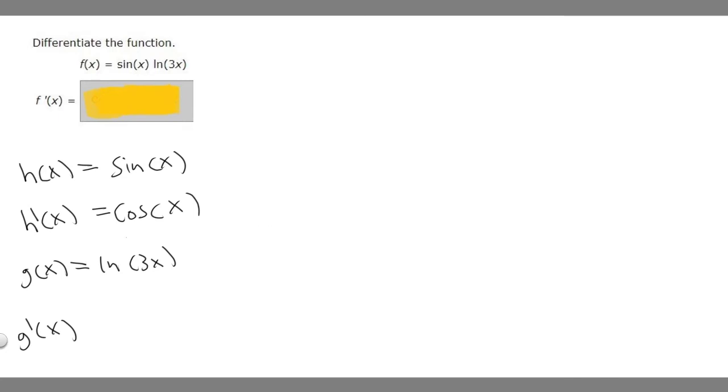And then we need to find the derivative of ln(3x). So we've got to use the chain rule. The derivative of ln(3x) is the derivative of our outside with respect to our inside, and then we multiply it by the derivative of our inside.